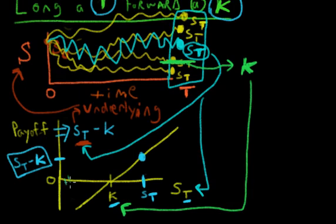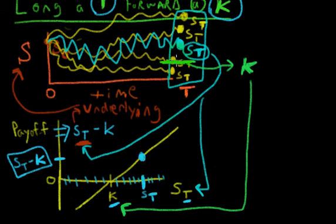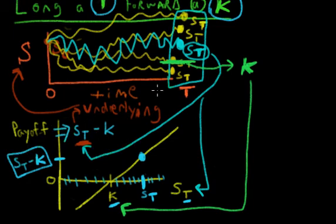S_T could be anywhere on this axis, and all these dashes I'm making are possibilities. But only one of these dashes is going to be the true value of the stock price at time T — it can only have one value at time T. Whatever that value is, it's going to land on this x-axis, either above this strike price, below the strike price, or at the strike price. In our case, I showed you just a few possible paths the stock could travel, and then I said let's assume this blue line is the true path, and it happens to be above K. So here, S_T is above K. This forward contract is deriving its payoff from this S_T — it's deriving its payoff from S_T, which is the stock price of the underlying.